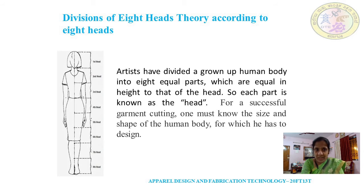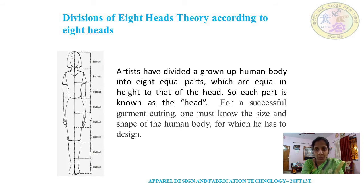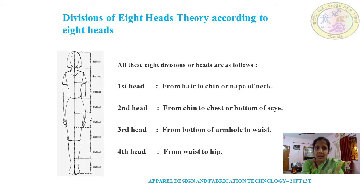So just see the image — one head is equal to one head height. So accordingly eight heads are there. For a successful garment cutting, one must know the size and shape of the human body for which he has to design. Here let us see what are those eight divisions and how they are divided accordingly.